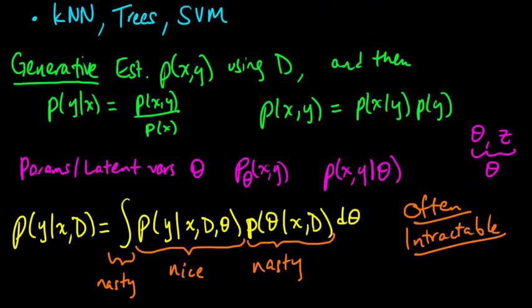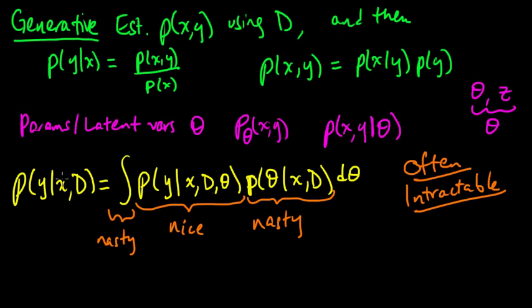And then we found that when we parametrized the model with some parameters or latent variables theta, in order to get that thing given our data and x, we needed to solve this sum or integral over the values of theta. And we observed that this is often intractable, and it turns out that it is.